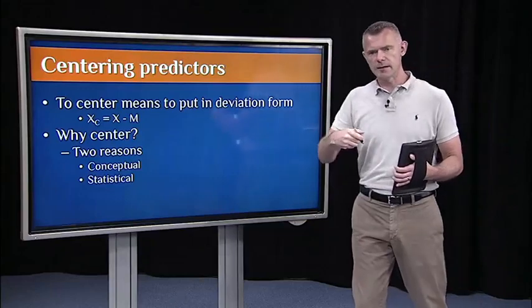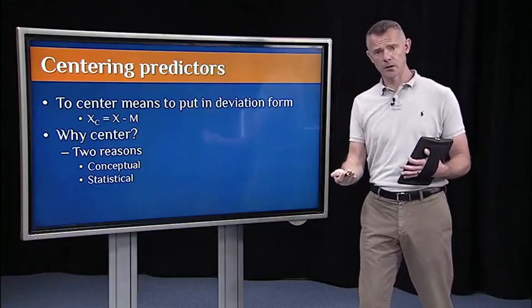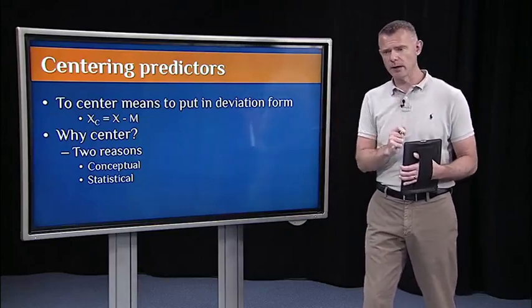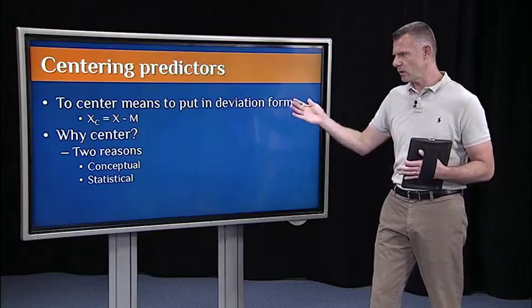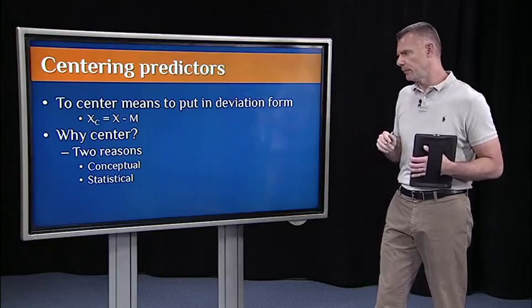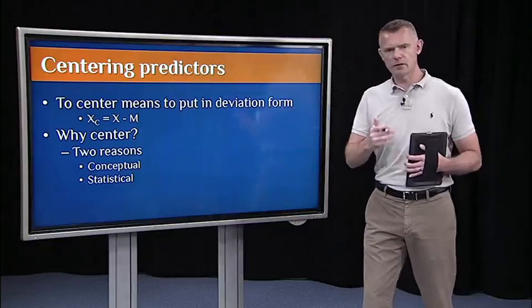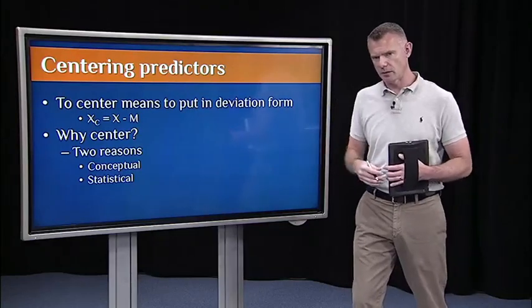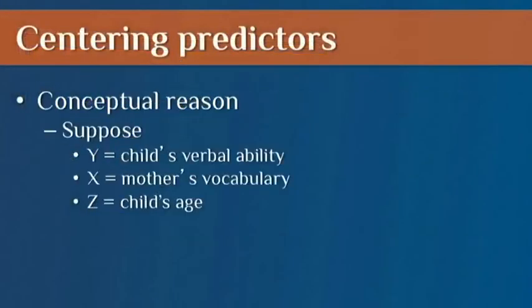Here, we just need the deviation score. What that does for us is it gives us an average for a single predictor X that's equal to 0. So after centering, the mean will be 0, and that's going to be really helpful. I'll show you how centering works and talk about conceptually why center. There are two reasons: one is the conceptual piece, and there's another that's a purely mathematical or statistical reason, particularly in moderation analysis.